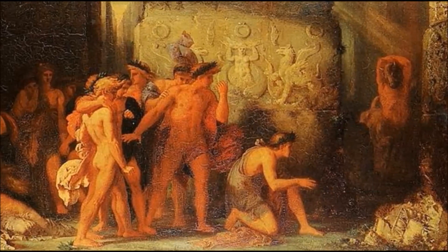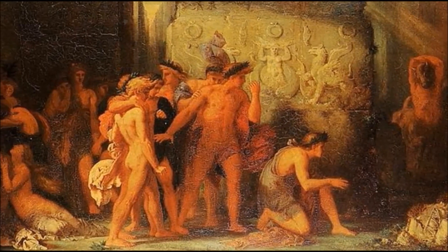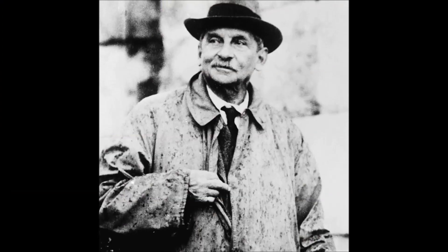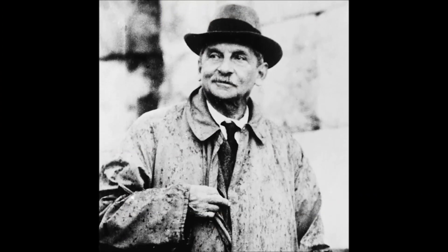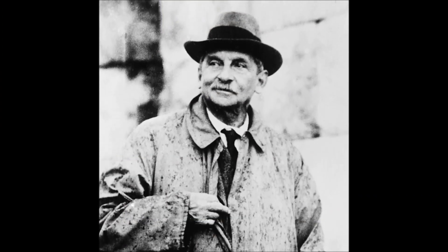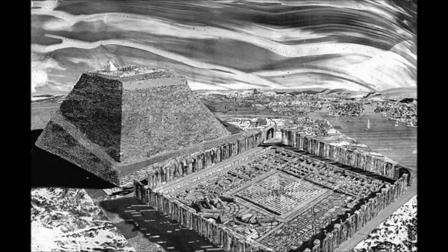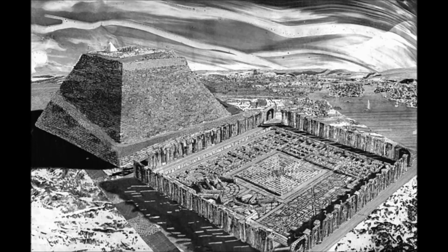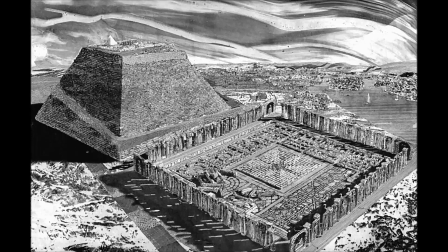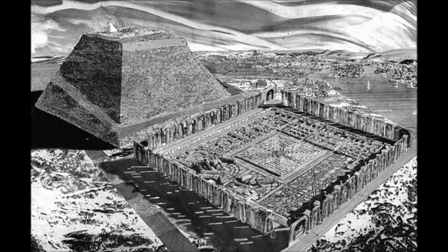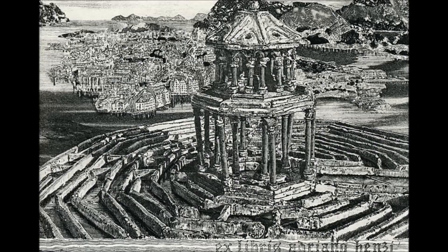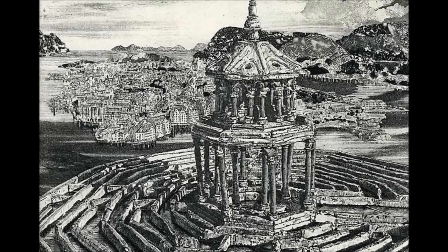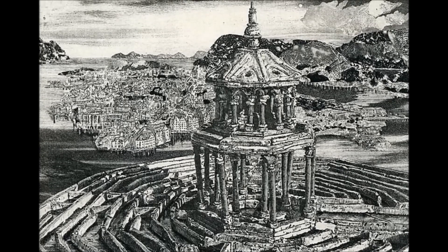The Cretan labyrinth, associated with Gnossus, was initially suggested by Arthur Evans but has faced skepticism in modern archaeological explorations. The Egyptian labyrinth, mentioned by Herodotus, was a complex building near the city of crocodiles. Pliny's Natural History lists labyrinths in Lemnos and Italy, both described as underground structures.